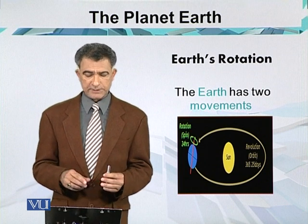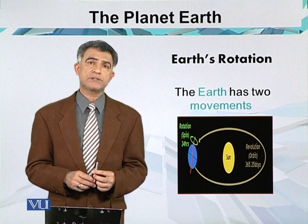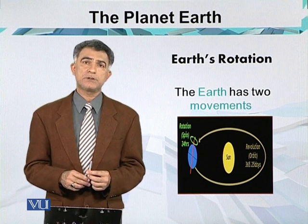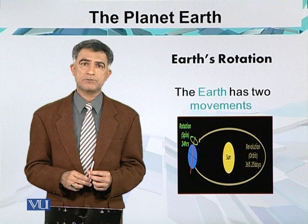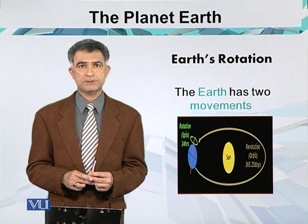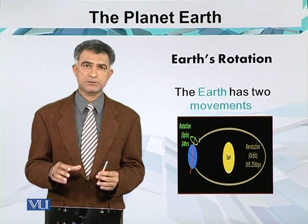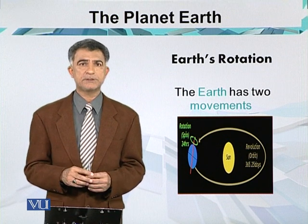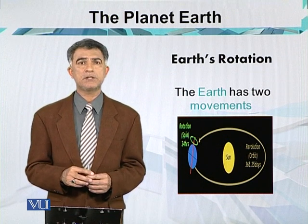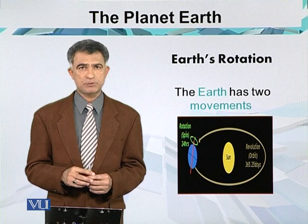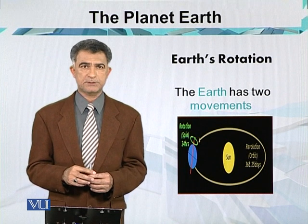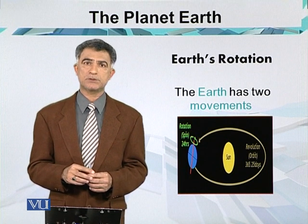The second motion, which is the most important and which creates seasons over the surface of the Earth, is actually called the revolution. This is the motion around the Sun.